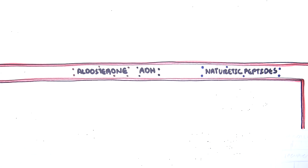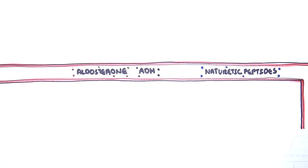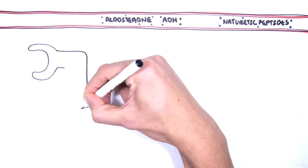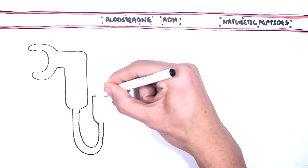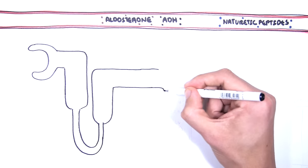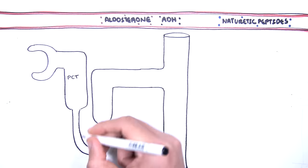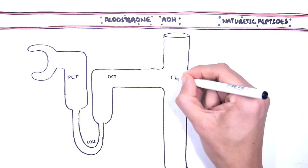These hormones that maintain fluid balance mainly affect the kidneys, and so we need to revise the functional unit of the kidneys which are the nephrons where these hormones act on. Here is the nephron. The head of the nephron is the Bowman's capsule. Here is the proximal convoluted tubules, the loop of Henle, the distal convoluted tubules, and the collecting duct.